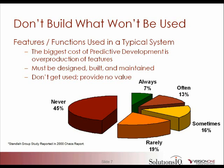About 7% of features are always used, 13% often, and 16% sometimes used. If you look at that statistic and think about the product you are working on, do you find some features that are not being used in your systems? When we force our users to come up with all the requirements up front, we are forcing them to decide what they would potentially use — but they never end up using it.